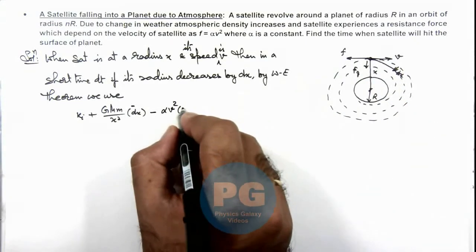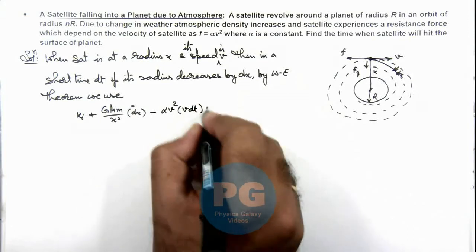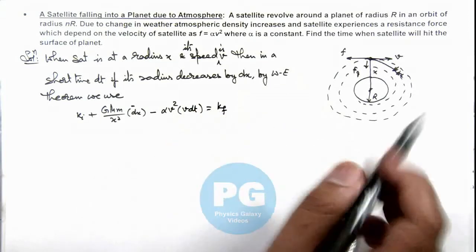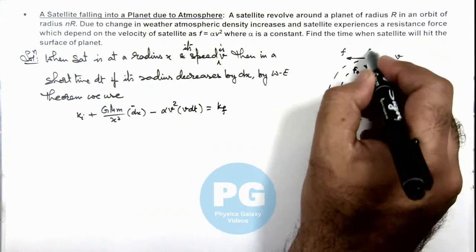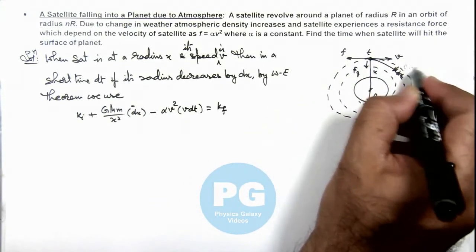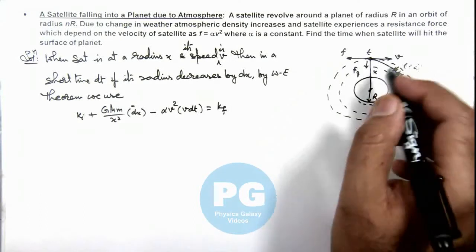Which can be taken as v dt, is equal to the final kinetic energy of satellite after time dt. Say this time is t and this time is t plus dt.